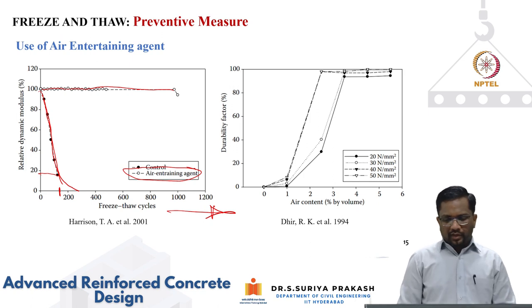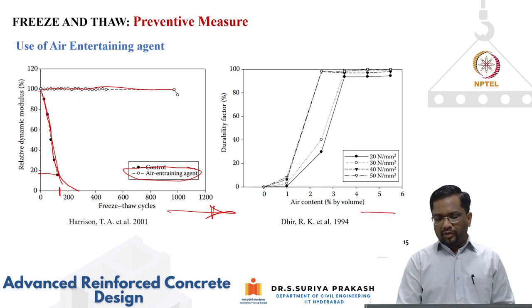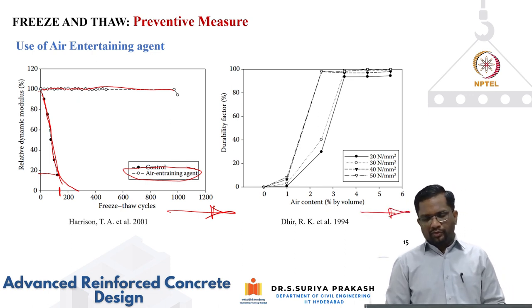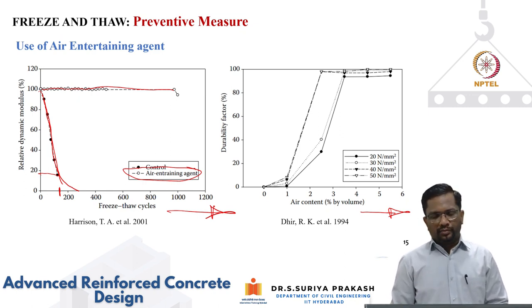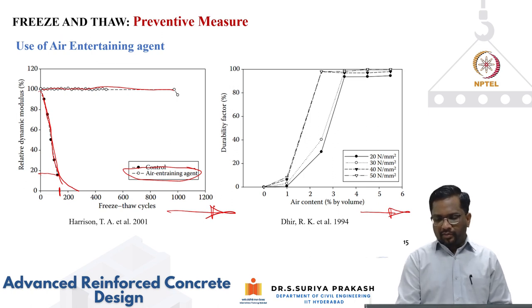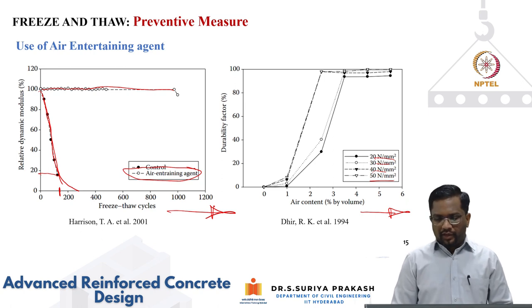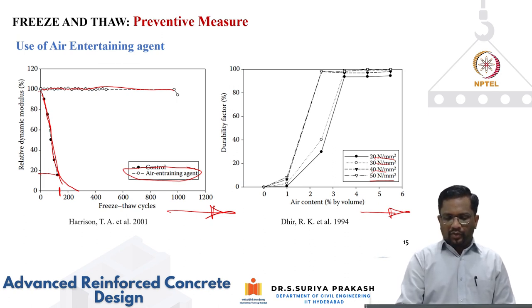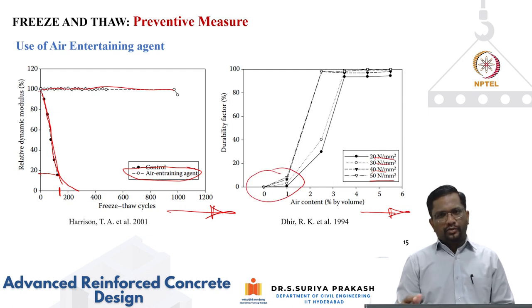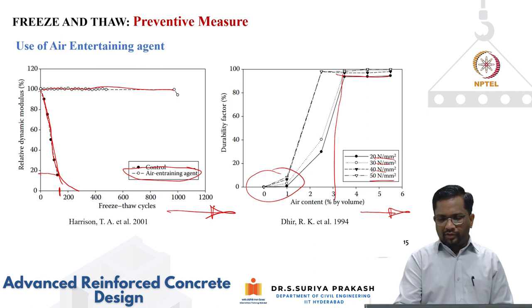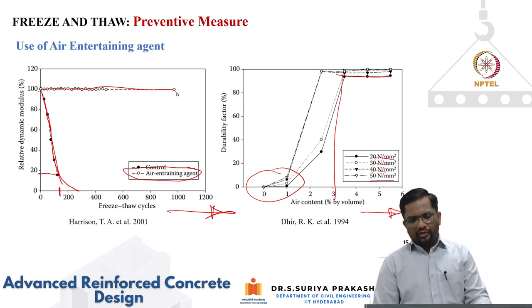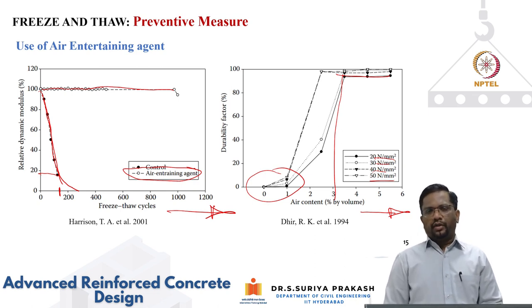Durability factor data confirms that for all concrete strengths (20, 30, 40, 50 MPa), adding air entraining agents significantly increases the durability factor. Without air entraining agents, the durability factor is very low for specimens subjected to freeze-thaw. When about 2.5 to 3 percent air is added, the durability factor remains close to 95 to 100. Typically, 2 to 4 percent air entraining agent is added to concrete prone to freeze-thaw effects, effectively negating freeze-thaw damage.